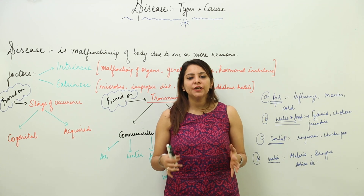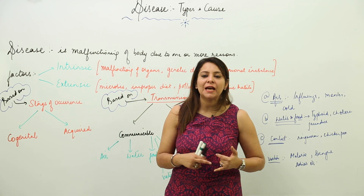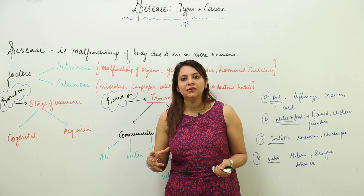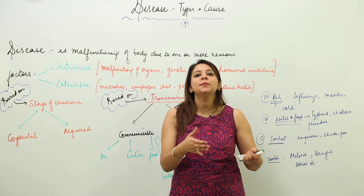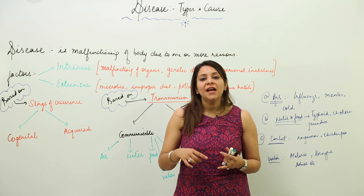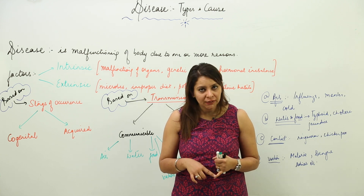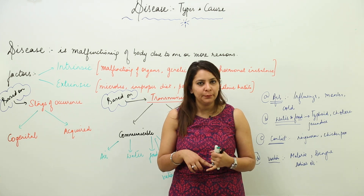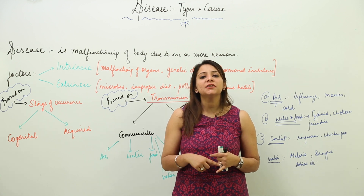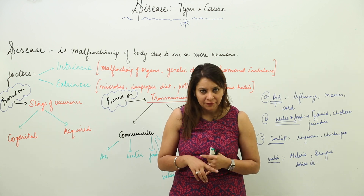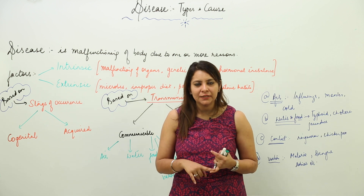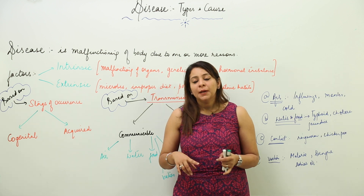We are going to start with a unit on disease types and causes. Before starting, we should know what we mean by a healthy person. Health is a state of physical, mental, and social well-being. When a person is physically fit, mentally fit, and socially fit, that person is said to be a healthy person.